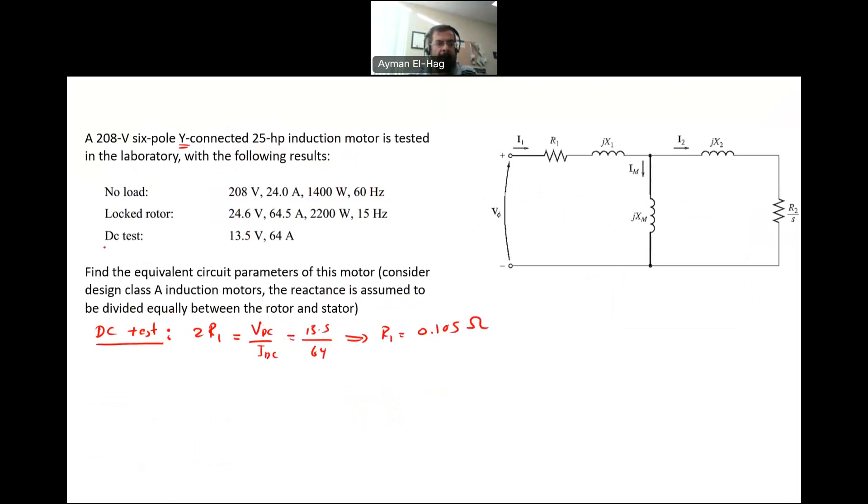Now we will use the no-load test. In the no-load test, we apply the rated voltage, the rated voltage line-to-line which is 208 as mentioned in the question. We will have the no-load current, which is basically the magnetization current. I2 will be almost equal to 0, so the whole current goes through R1, X1, and XM in series.